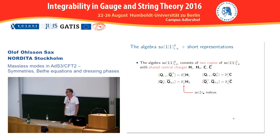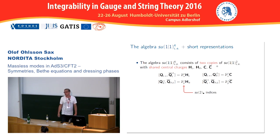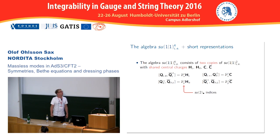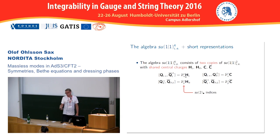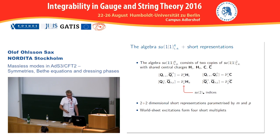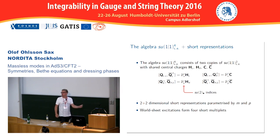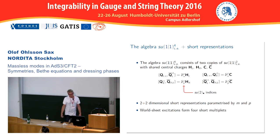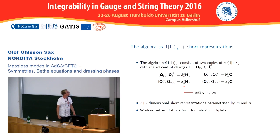The actual symmetry in the AdS3×S3×T4 case is SU(1|1)^4 — just two copies of the algebra I just discussed. You take two copies of SU(1|1)^2, so the supercharges now carry an extra SU(2) index, but the central charges of the two copies are identified. The short representations are now 2+2 dimensional, consisting of two bosons and two fermions, still parameterized by the same mass and momentum.